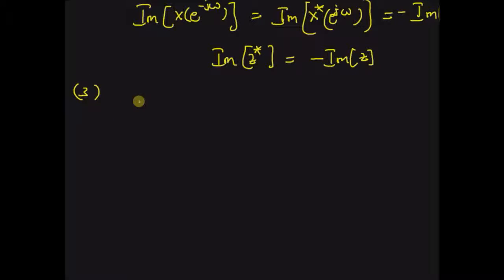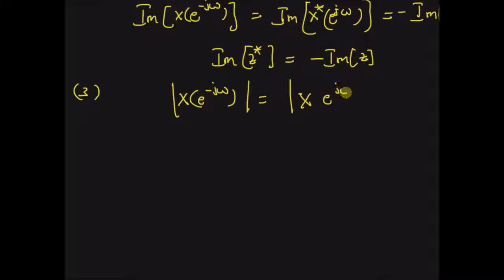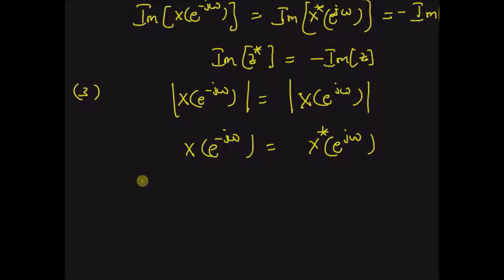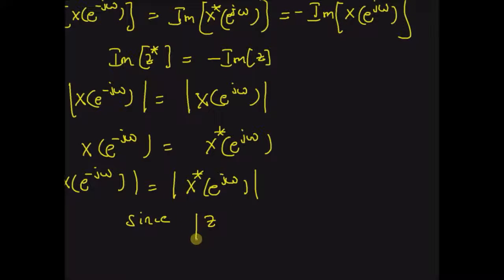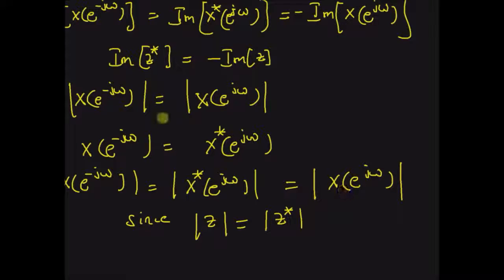The next consequence is: the magnitude of X(e^{-jω}) is equal to the magnitude of X(e^{jω}). From the first symmetry property, by taking the magnitude on both sides, we can clearly see that the magnitude of X(e^{-jω}) is equal to the magnitude of the conjugate of X(e^{jω}). And since the magnitude of a complex number is equal to the magnitude of its conjugate, it should be equal to the magnitude of X(e^{jω}). This proves the magnitude property.